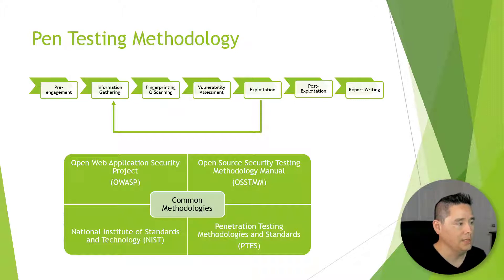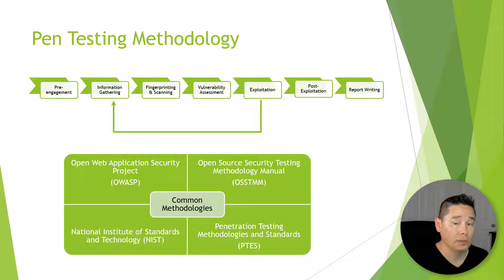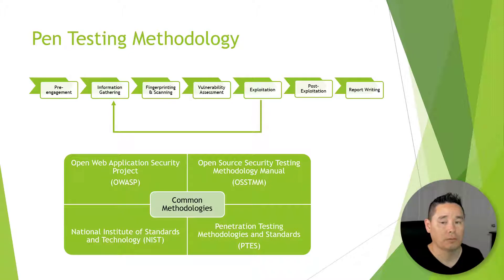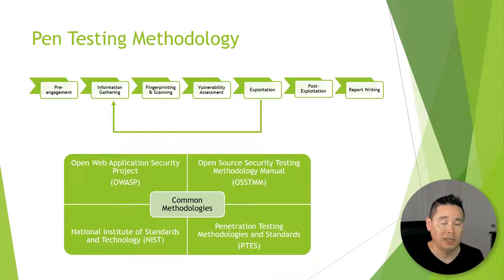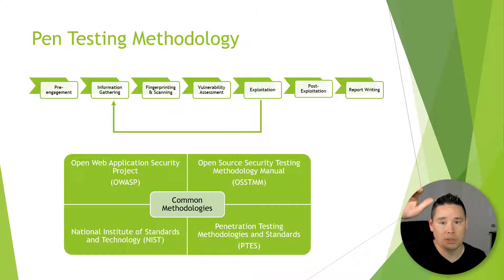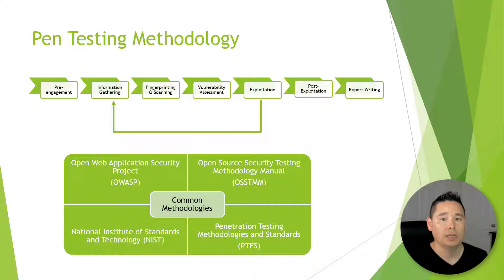The pen testing methodology — for those of you that come from a project management perspective — you can think of it as a waterfall methodology. Waterfall means you go from one step to the next, you go to the next phase, and you just continually go down. So you start at number one, then you go to two, then three, and so forth.